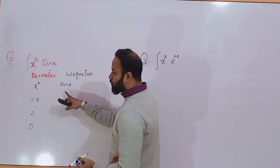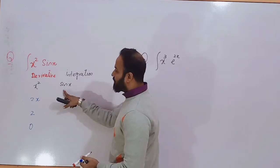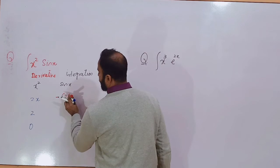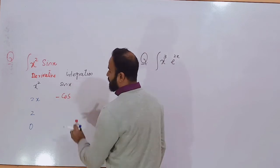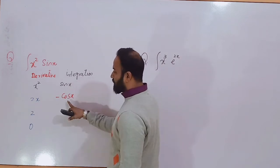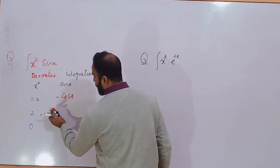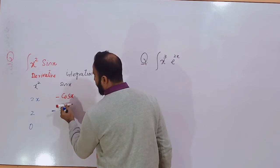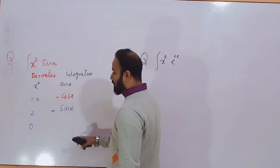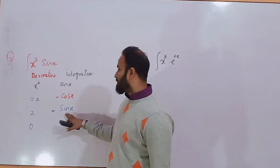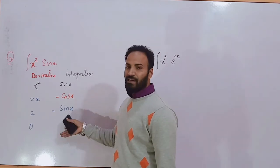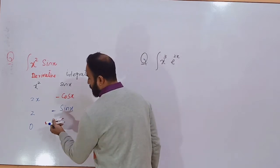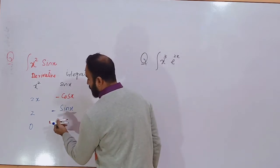I want to take the integration of sin x — that is minus cos x. And what is the integration of cos x? That will be minus sin x. And what is the integration of sin x? That is again minus cos. So minus and minus will become positive, so it will be cos x.